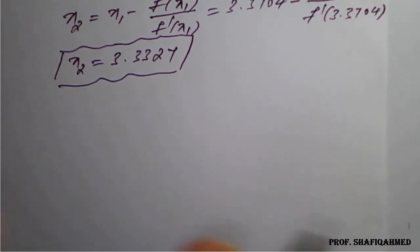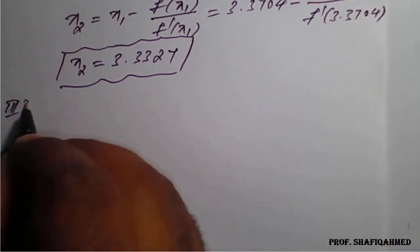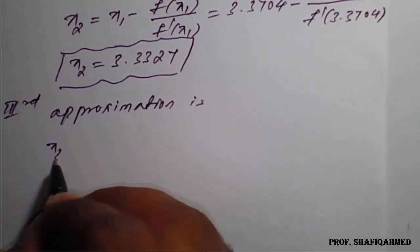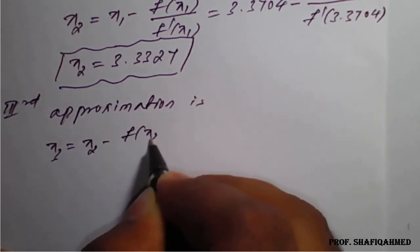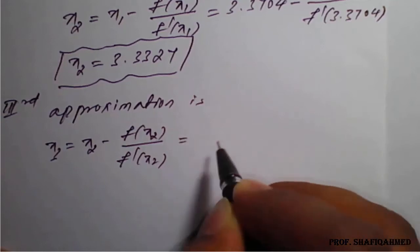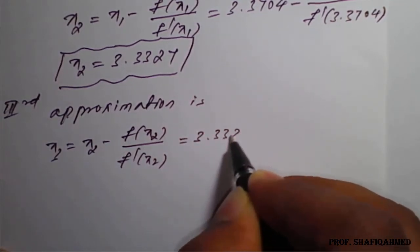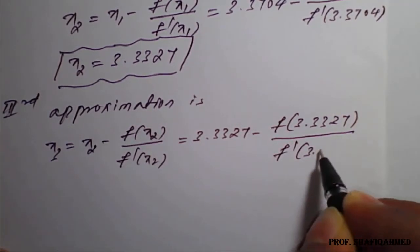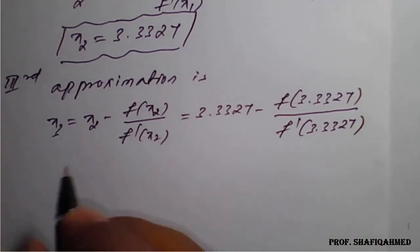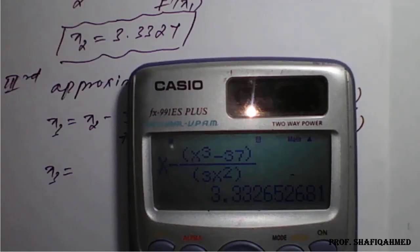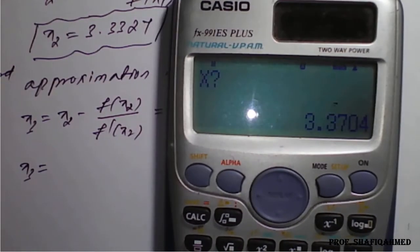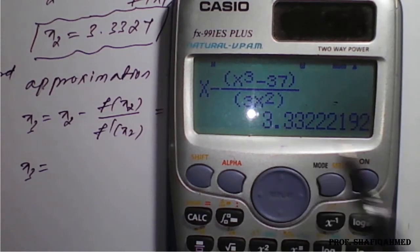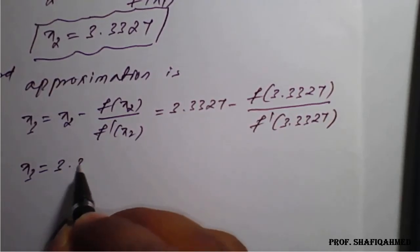We are not satisfied with first and second approximations, so we go for the third approximation. x₃ equals x₂ minus f(x₂) divided by f'(x₂), which is 3.3327 minus f(3.3327) divided by f'(3.3327). Using the calculator with x equals 3.3327, the answer comes as 3.3322. So x₃ equals 3.3322.